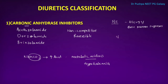Contraindications for carbonic anhydrase inhibitors: we should not give them in metabolic acidosis, liver failure, or severe chronic obstructive pulmonary disease.